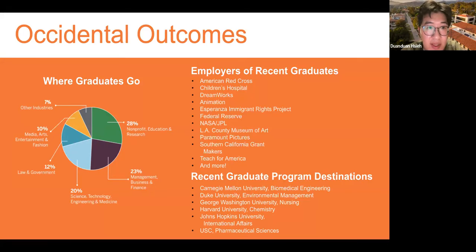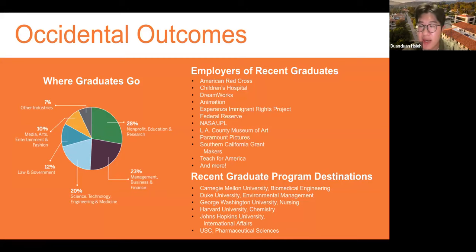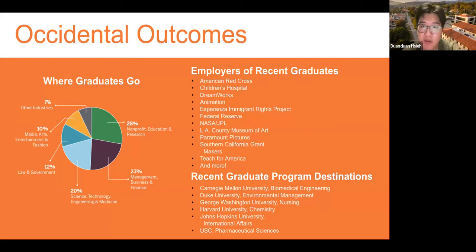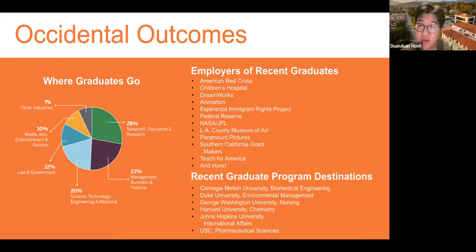Regarding dorm living: students are required to live in dorms for at least three years. No, your daughter would not be placed in a room with someone she's uncomfortable with. We have gender-neutral housing and gender-neutral floors, but also segregated gender floors. When you come in as a first year, you fill out a form indicating your preferences for a roommate, and you'll be placed in an area where you're comfortable.